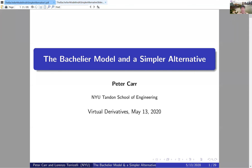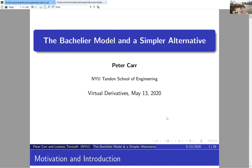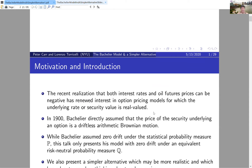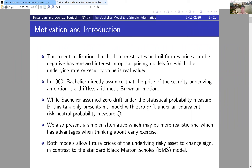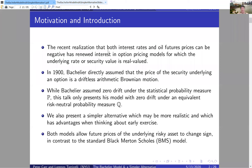This talk is on real-valued underlyings, and is joint work with Lorenzo Torricelli, a professor at the University of Parma in Italy. As many of you know, we had negative oil futures prices recently, and this prompted the Chicago Mercantile Exchange to change the model they officially use for marking options from the benchmark Black-Merton-Scholes model to the Bachelier model. The Bachelier model is already being used in over-the-counter interest rate options markets.